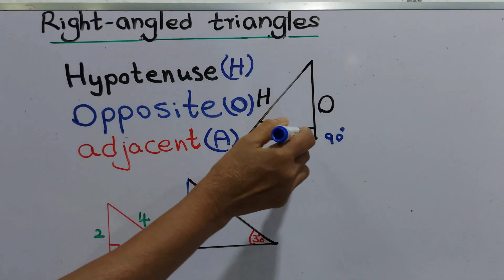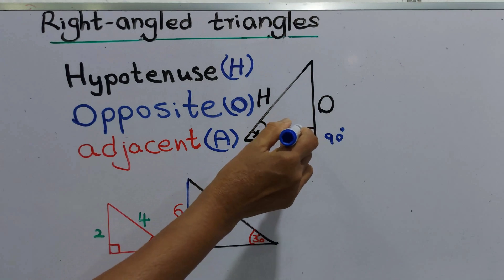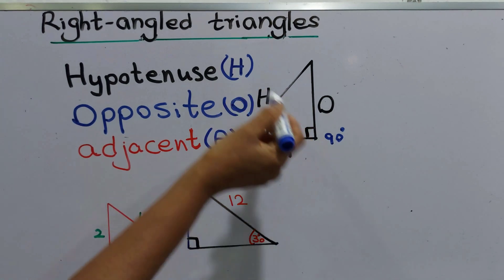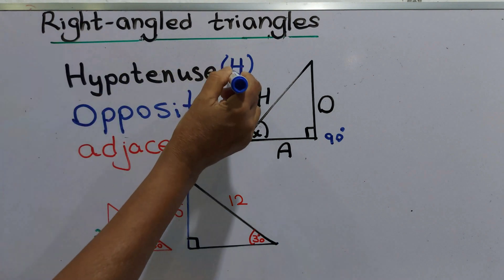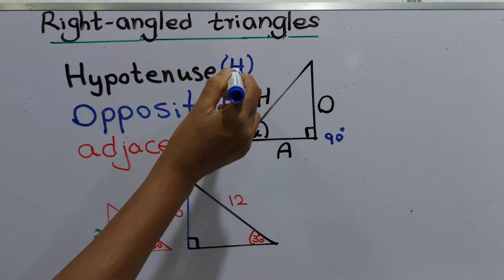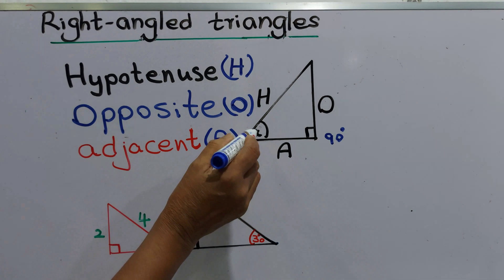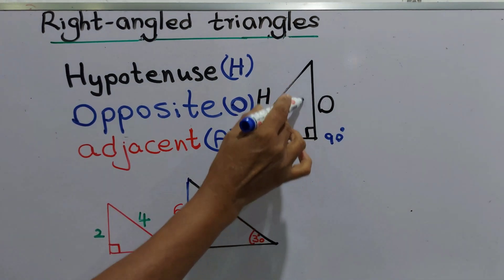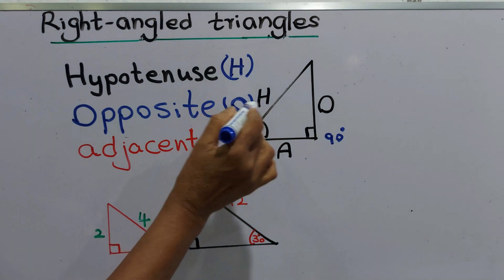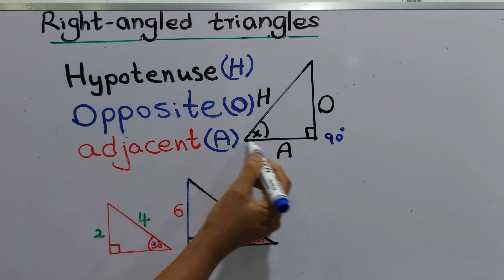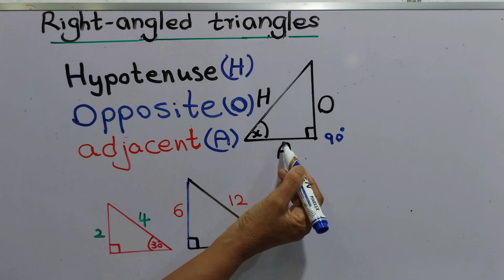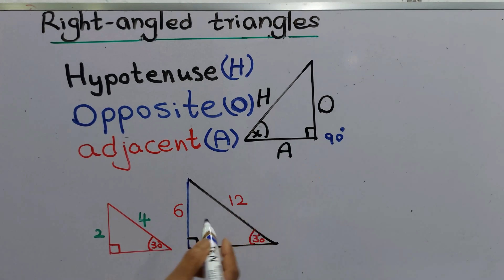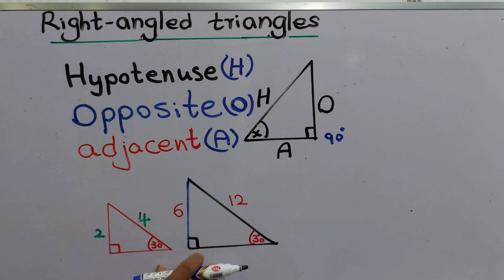To summarize: in a right angle triangle, the side opposite the right angle is called the hypotenuse, named H. The side opposite the marked angle is named opposite (O), and the other side is called the adjacent (A). Now look at two right angle triangles, one of which is an enlargement of the other.